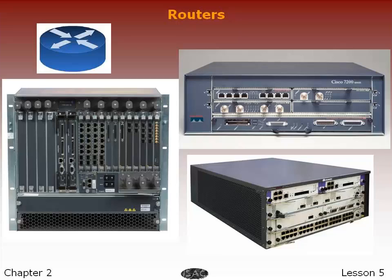The very first device that had fundamentally the same functionality as the router does today was the Interface Message Processor, or IMP. IMPs were the devices that made up the ARPANET, the first packet network. The idea for the router, called gateways at that time, came about through an international group of computer networking researchers called the International Network Working Group, or INWG, set up in 1972 as an informal group to consider the technical issues involved in connecting different networks.